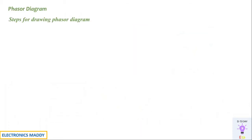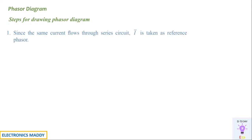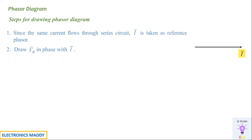So, phasor diagram — the first and foremost important thing is how to draw the phasor diagram. This is one of the most commonly involved areas of confusion for students, but it is very simple. There are a few steps I'll show you. First step is to take a reference. Since the same current flows through the series circuit, current in a series circuit will remain the same. So I bar is taken as a reference in the horizontal direction. Next step is to draw VR bar in phase with I bar, because VR is in phase with respect to I, as already discussed. So I will be representing VR bar in phase with respect to I bar.